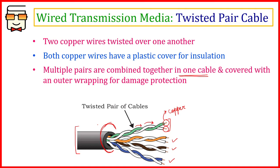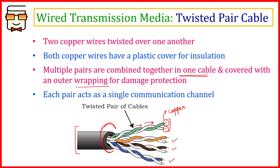This outer covering prevents any kind of physical damage. Twisted pair cables are physically used for connecting different devices and telephone lines — they are laid on the ground across roads and fields, where they can be damaged by environmental factors or physical impact. So all the pairs are combined together and covered with a thick outer covering for protection.